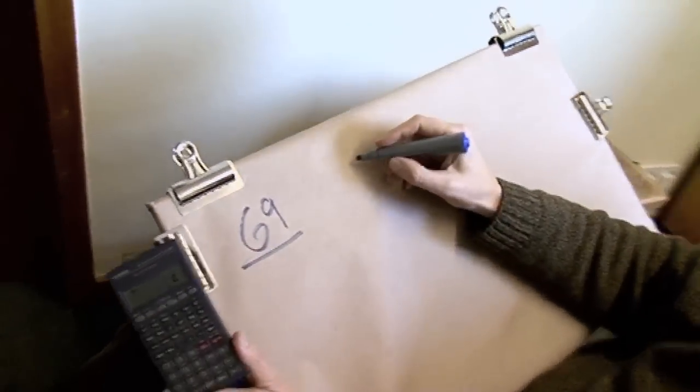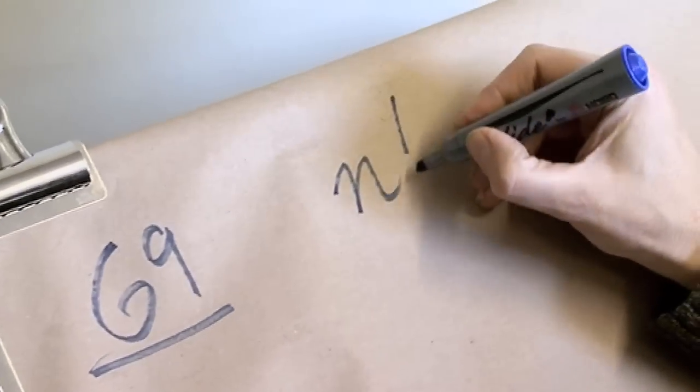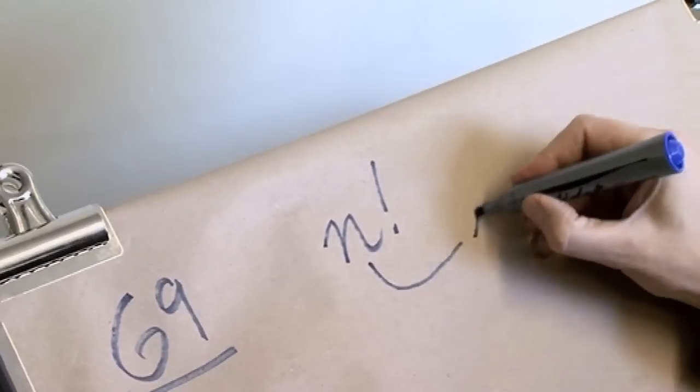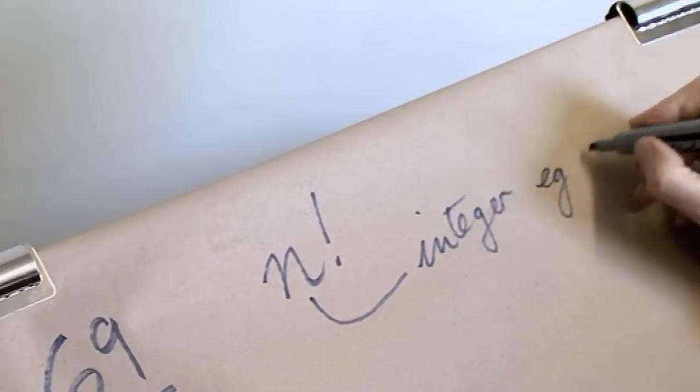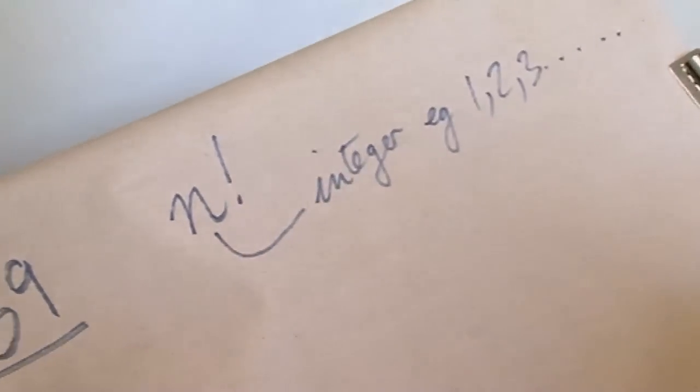I'm going to start off by explaining what the symbol factorial n is, where n is an integer, for example 1, 2, 3, 4, any integer like that. It's n with an exclamation mark after it, and it's got a special meaning in mathematics.